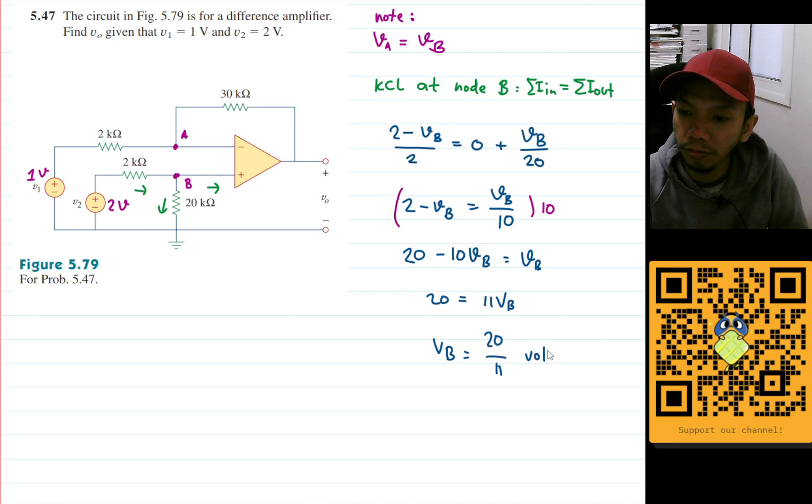That should be the case for VB. Maybe just leave it as is. So now we need to use KCL at node A here, and my assumption is the current goes there. But we know VA already because VA is equal to VB, and that VB will be 20 over 11, right? And now let's do KCL at node A.